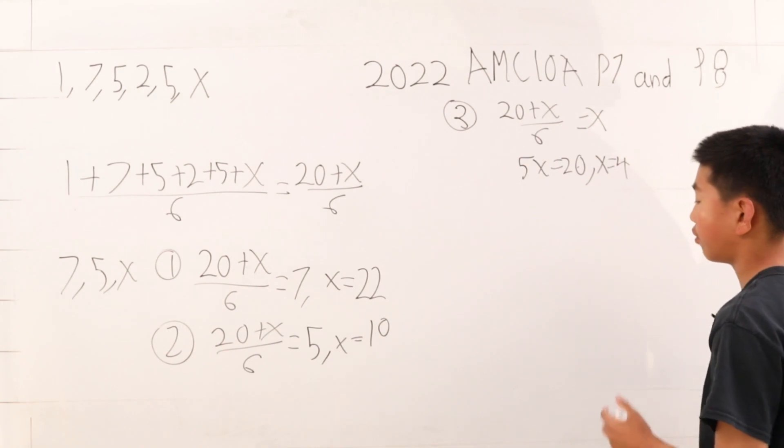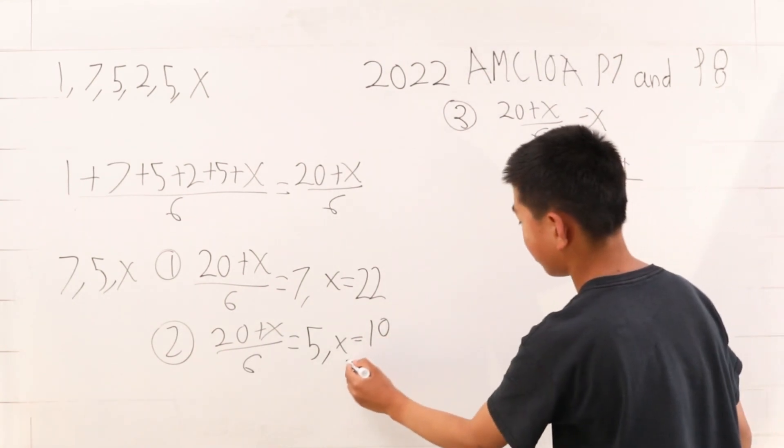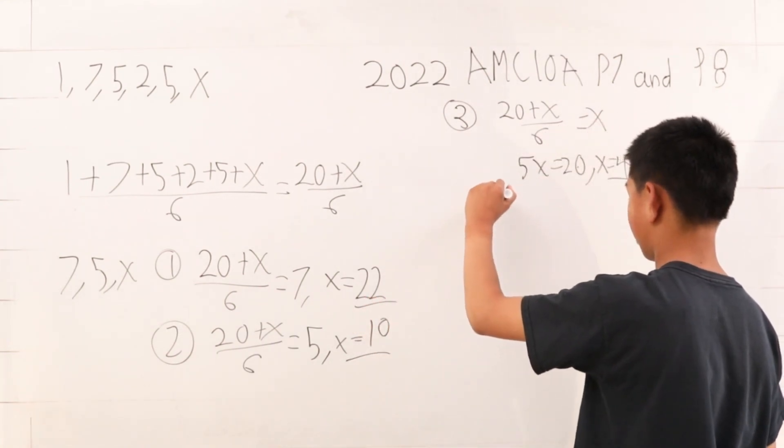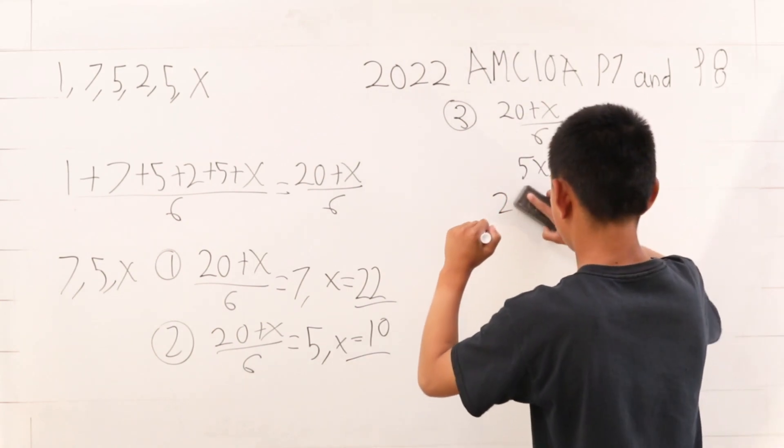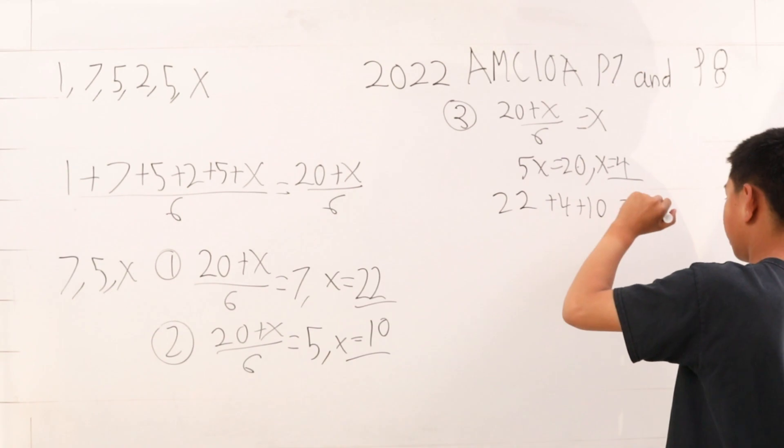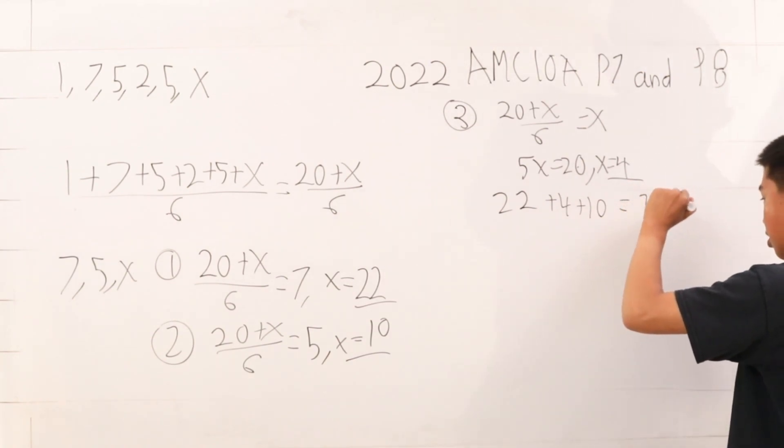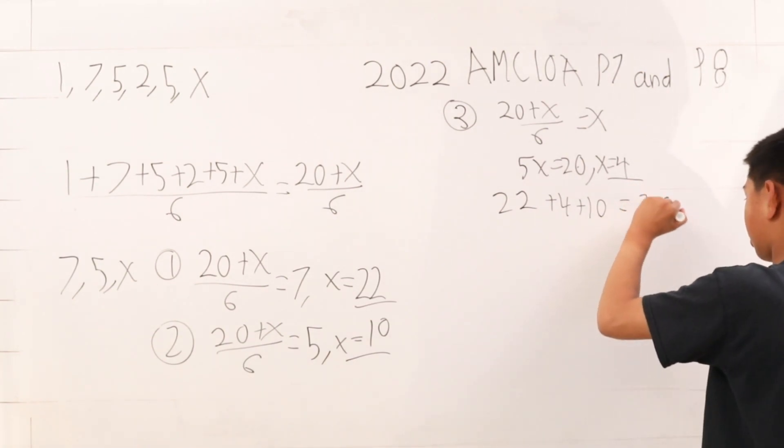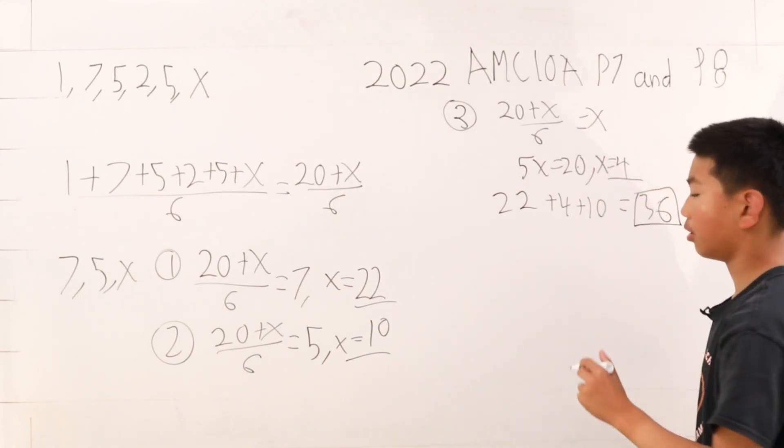So we have our three values for x: 4, 10, and 22. Now, 22 plus 4 plus 10 will yield 36, which is our answer.